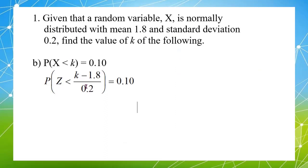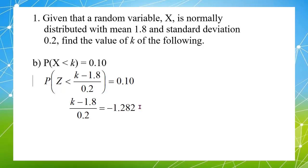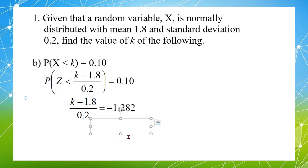The Z value from the table is 1.282, but we need to make it negative because the original probability is 0.10, which is less than 0.5 — meaning Z is a negative value. So to find K, we compute negative 1.282 times 0.2 plus 1.8, giving K equal to 1.5436.